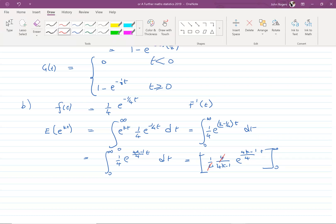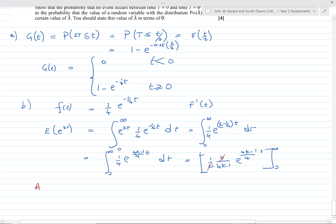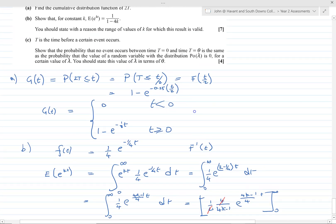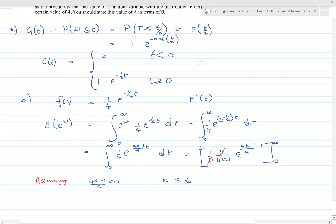So assuming that 4k minus 1 over 4 is less than 0, in other words k is less than a quarter, which is our answer to part of the question, then we can say that e to the kt equals, put infinity in there, we get 0.